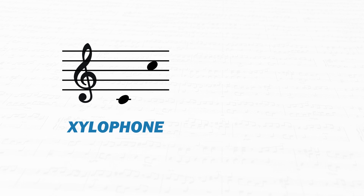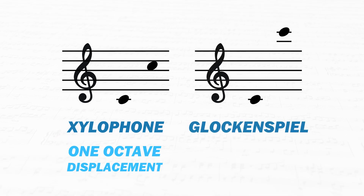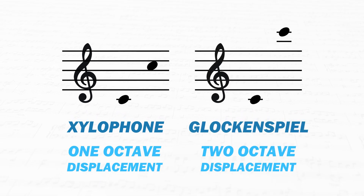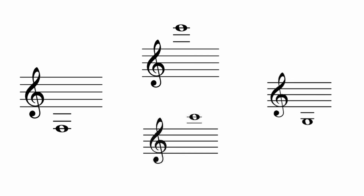So to recap: the xylophone has a displacement of one octave and the glockenspiel has a displacement of two octaves. Ultimately, the reason why these displacements or transpositions exist is because of ledger lines.